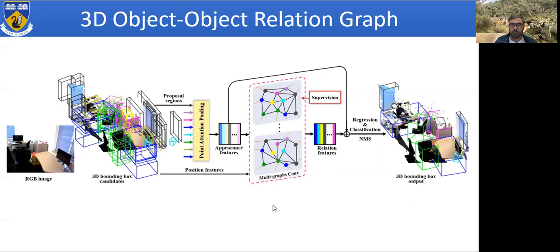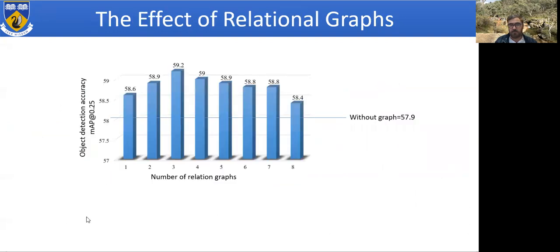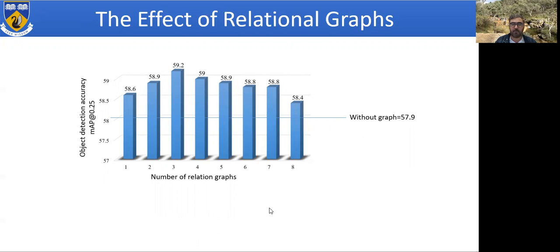We construct more than one graph to see the benefit of the relational graph. In an ablation study: without using a graph, average precision at 0.25 mean IoU is 57.9%. Using one graph, this jumps to 58.6; with two graphs, 58.9; with three graphs, 59.2, where it peaks. For all remaining experiments we use three graphs. After three, accuracy slowly drops, but it always remains higher than when using no graph — regardless of how many graphs are used.